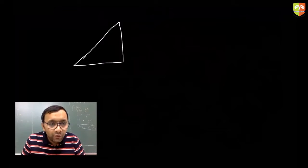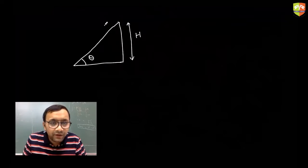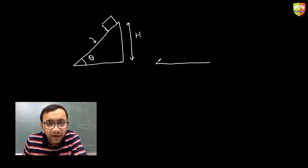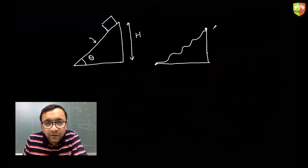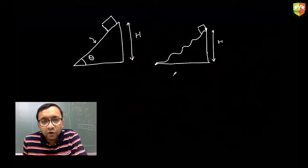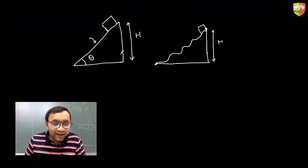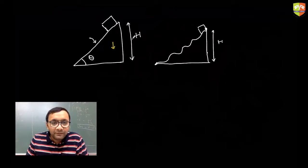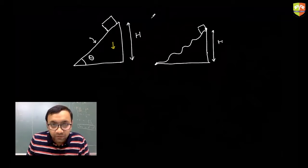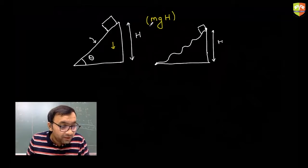Consider an inclined plane at angle theta with height h. Now I'm replacing this incline with a wavy path, keeping the initial and final points the same — same height h. A mass is placed here. What is the work done by gravity in both cases? The gravity force acts downward and displacement is also downward, so the work done by gravity is MGH in both cases.